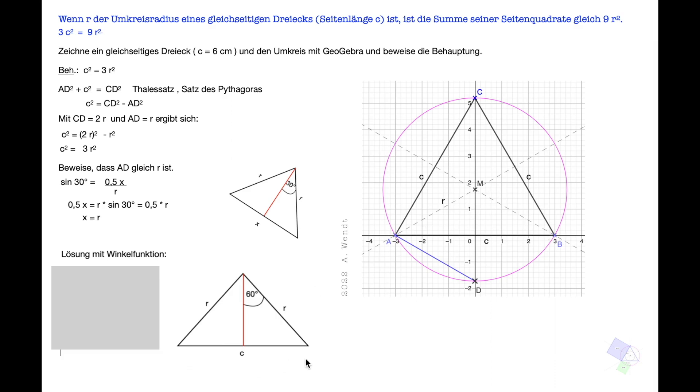Dieses Dreieck haben wir hier nochmal gezeichnet. Ihr sollt jetzt versuchen, den Satz mal mit der Winkelfunktion zu beweisen. Zur Bearbeitung stoppt das Video jetzt. Sinus 60 Grad ist Gegenkathete durch Hypotenuse. Sinus 60 Grad ist 0,5C durch R. Wir multiplizieren mit R und halten 0,5C gleich R mal Sinus 60 Grad.